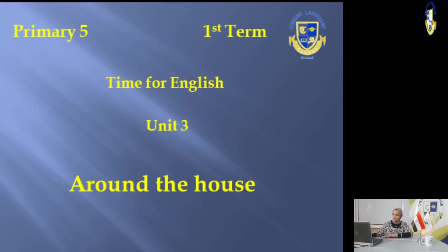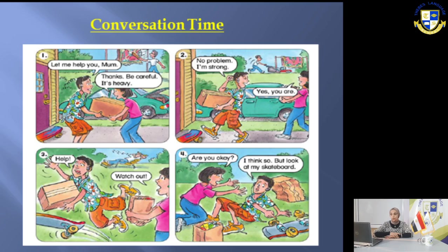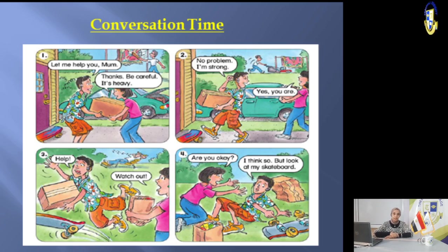Hello, dear Primary 5 students! Today we are going to have Unit 3 in your book 'Time for English.' I hope you like this lesson. We are going to go around the house. Let's go to slide 2. As you can see, this boy is very gentle — he's trying to help his mother. Let's see what's going to go on.